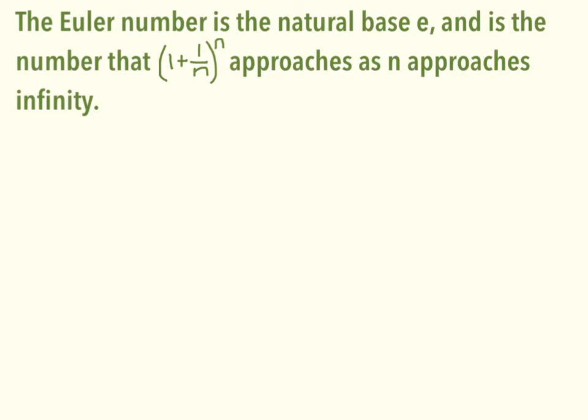If you were to graph that, it will approach an asymptote, and that asymptote is going to be E, which is approximately 2.718, that's what you need to remember, 1828, 1828.